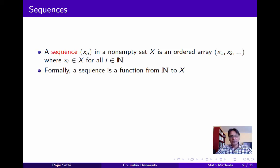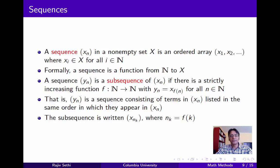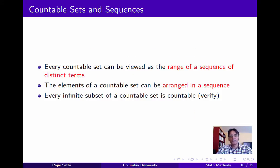Next we consider sequences. A sequence x_n in a non-empty set X is just an ordered array of elements, each of which belongs to X. You can think of a sequence as a function from the set of natural numbers to X, where the image of n is just the nth term in the sequence. A sequence y_n is a subsequence of x_n if there exists a strictly increasing function f from the natural numbers to itself such that f tells you which term in the x-sequence is the nth term in the y-sequence. Since every countable set can be put into a one-to-one correspondence with the natural numbers, every such set can be viewed as the range of a sequence of distinct terms, and every infinite subset of a countable set must also be countable.